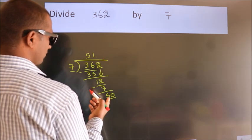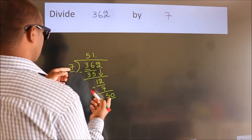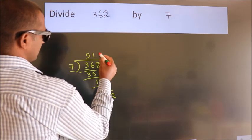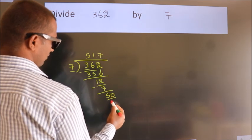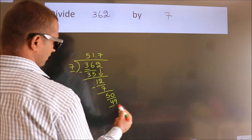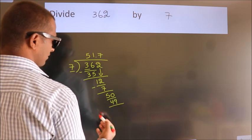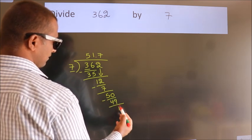A number close to 50 in the 7 table is 7 sevens 49. Now we subtract and we get 1.